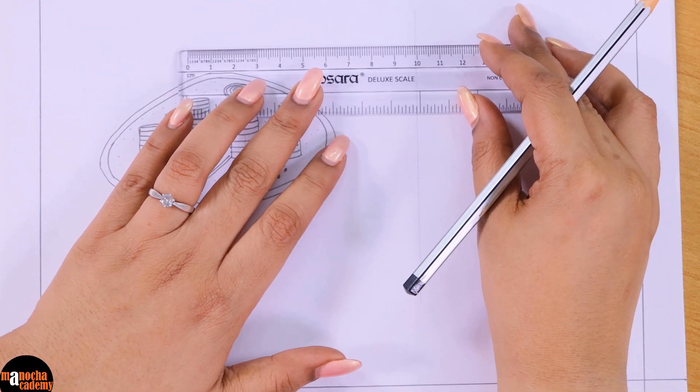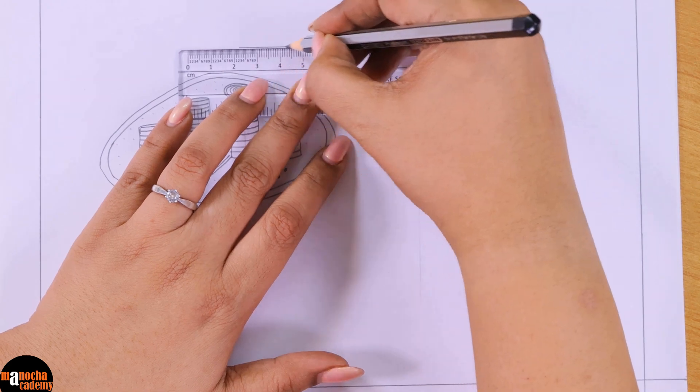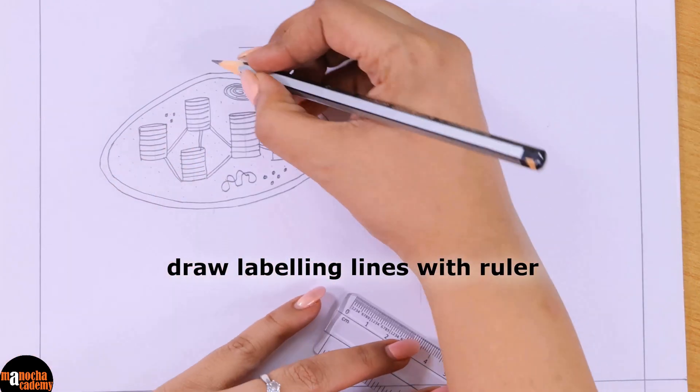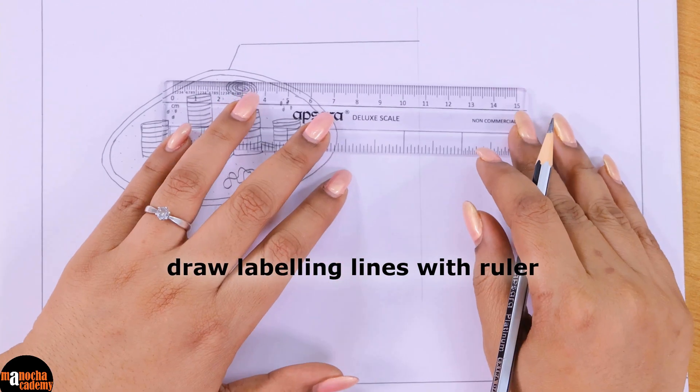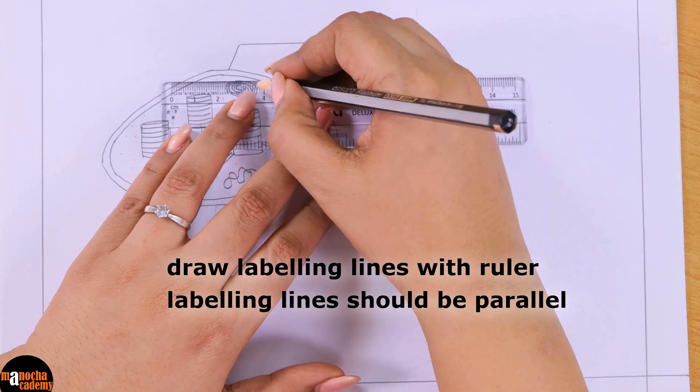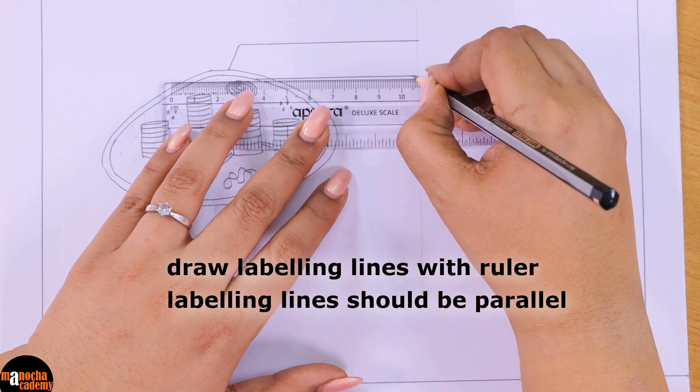Whenever you are labeling, please remember to draw the lines with a ruler and keep the lines parallel. There should be no lines criss crossing each other.